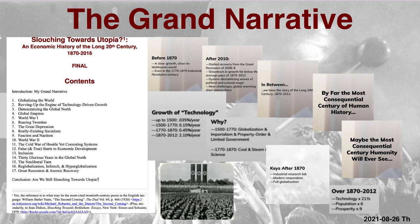During this period, humanity goes from poverty to at least potential wealth. Over 1870 to 2010, our technological capabilities deployed into the world economy multiply 21.5-fold. Our population multiplies six-fold. Our prosperity multiplies nine-fold. The keys that unlocked this cornucopia were the industrial research lab, the modern corporation, and full globalization.